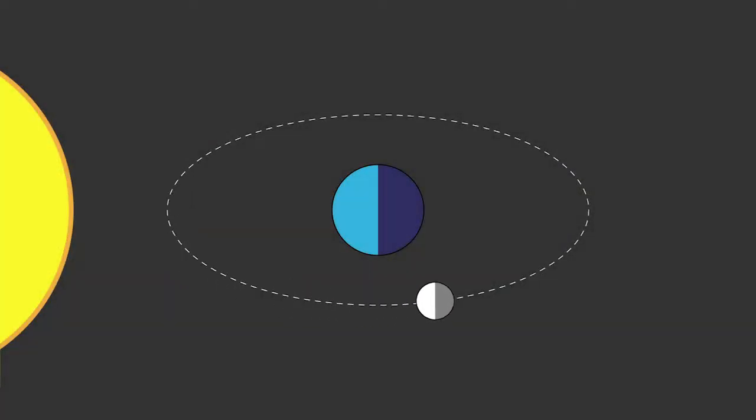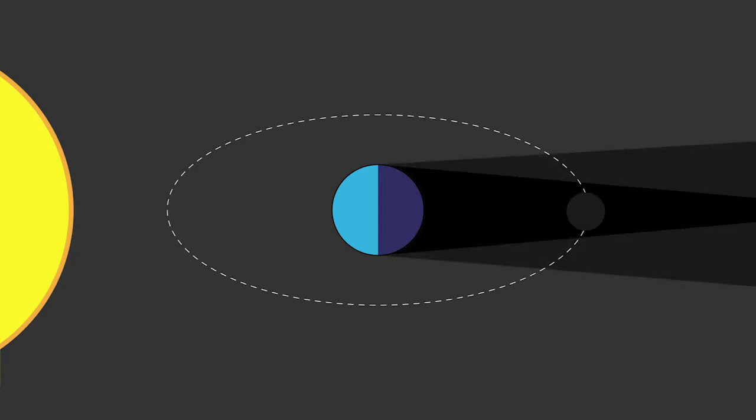One half of the Moon is always lit by the Sun, with the exception of a lunar eclipse, where the Moon lines up directly behind the Earth, blocking the sunlight from hitting it.